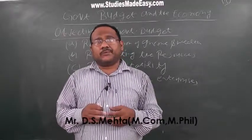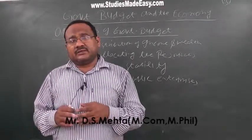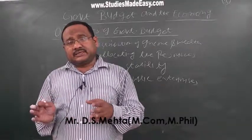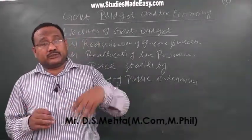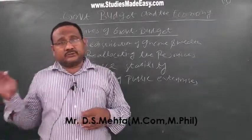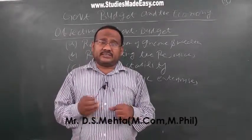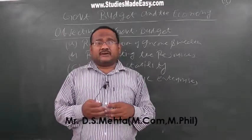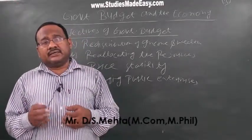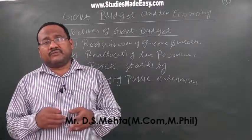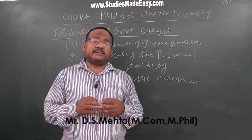The third objective is price stability. The main objective of the government is to stabilize the economy, meaning there must be neither too much inflation nor deflation — neither excessive price rise nor prices falling too low. For this purpose, government introduces fiscal policies and monetary policies from time to time, such as increasing or decreasing the bank rate or interest rate, to stabilize the economy.